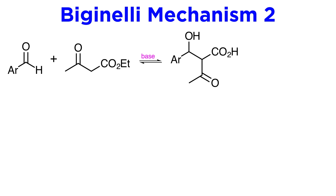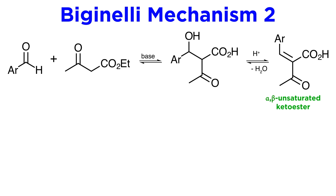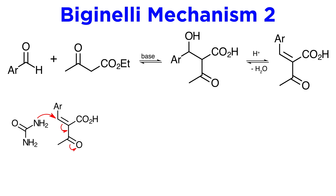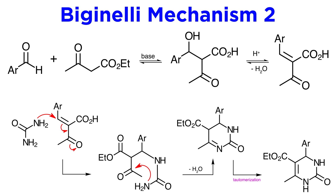Now if you are familiar with the Hantzsch synthesis of pyridines, which we have previously discussed, you may know that beta-ketoesters react with aldehydes very readily, at least under basic conditions, and therefore an alternative mechanism is in principle possible. Thus the beta-ketoester, via its enol form, may attack the aldehyde first. Dehydration promoted by acid would yield the alpha-beta unsaturated keto ester, which then would undergo conjugate addition by the urea nucleophile, and the end stage would be identical to the first mechanism. This mechanism was originally proposed, but all current evidence points to the first one as correct, at least under typical Biginelli conditions.